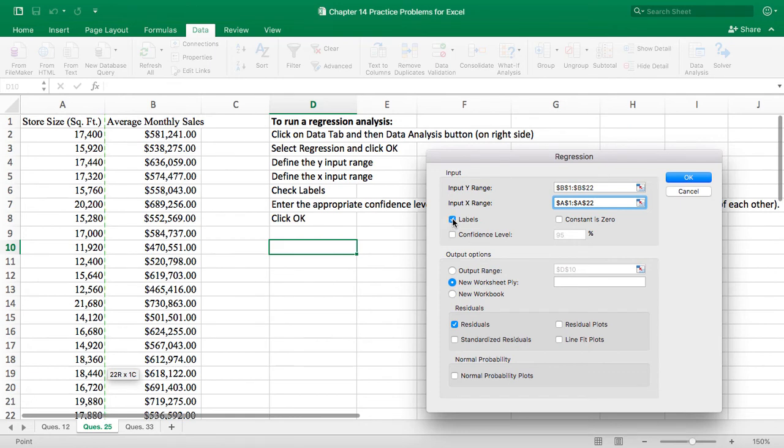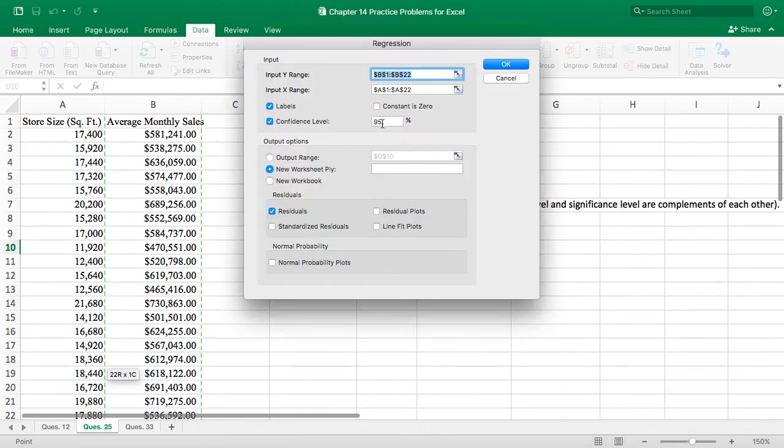Now, for the confidence level, this is the complement of our level of significance. Recall I suggested scanning the problem to see if any other information was provided. The level of significance given in the problem was 0.05, so I'm going to click on the confidence level. If my level of significance is 0.05, then my confidence level is 95% or 0.95 because the two are complements of each other. You can check on residuals here if you want to see all the residual data, which is the errors between our actual values and our predicted values. If you click OK, this will take you to a new tab, or you can click on the output range and choose to place it on the same tab as our data. I'll do the output range so I can have it side by side.